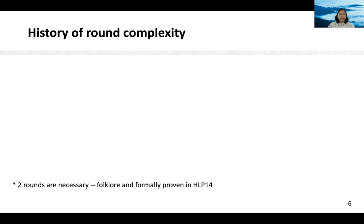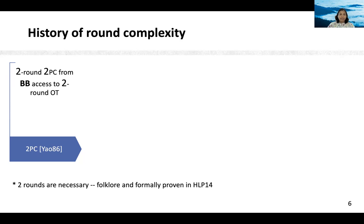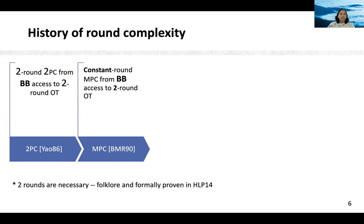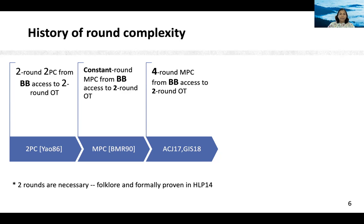This is a folklore result and is formally proven in HLP '14. In a two-party setting, the seminal work of Yao '86 shows that two rounds are sufficient as well, and this protocol makes black box access to oblivious transfer. In the multi-party case, for a long time we only knew about constant round protocols from black box access to oblivious transfer, and this result is due to BMR '90. Recently, Anand et al. in 2017 presented a four-round MPC protocol from black box access to two-round oblivious transfer, improving the result of BMR.